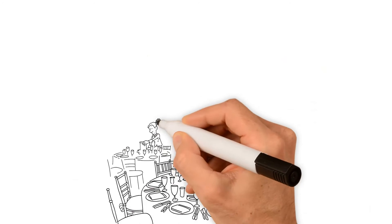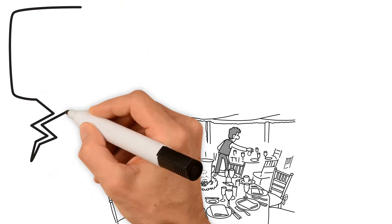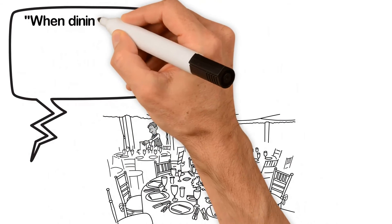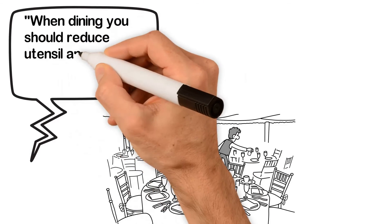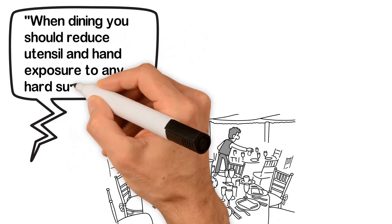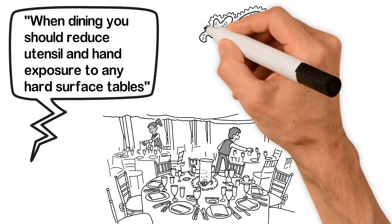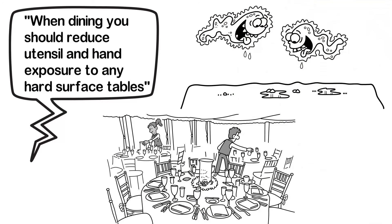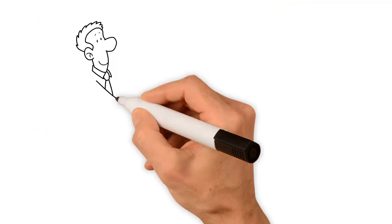The way we can get restaurants to start providing a clean place to put utensils is by asking for a tablecloth when you make your reservation. When dining, you should reduce utensil and hand exposure to any hard surface tables. Restaurants may believe they're cleaning hard surfaces, but we need them to remove the organic load so they kill the microbes.